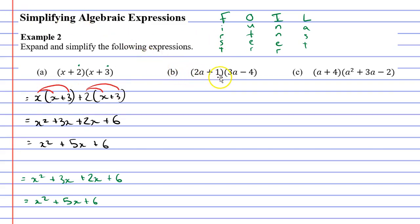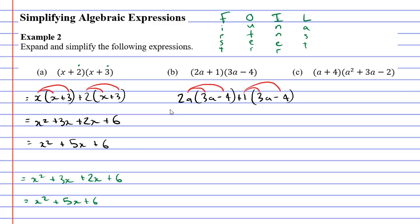For question B, I'm going to split the two terms. I've got 2a, and next to that I write the second set of brackets: 3a minus 4. Then the second term is plus 1, so I write plus 1 and copy down the second set of brackets: 3a minus 4. Now expanding: 2a times 3a — 2 times 3 is 6, with two a's, giving 6a squared. Then 2a times minus 4 — 2 times 4 is 8, so minus 8a.